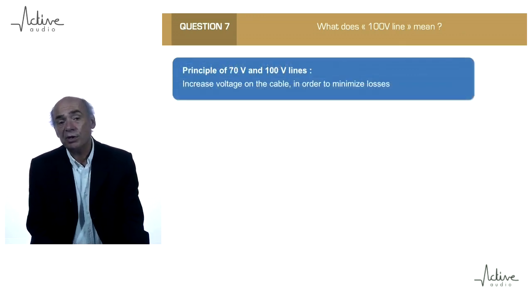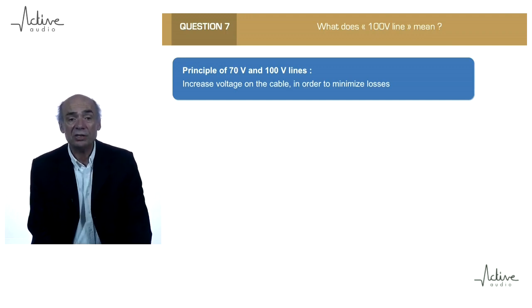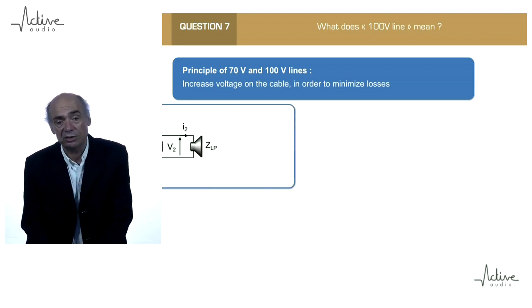The principle of the 70V or 100V lines is to increase the voltage on the cable in order to minimize the losses.